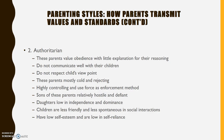The second style is authoritarian — high control and low warmth — where parents value obedience and compliance with little explanation for why they want that. Communication is not good, and they don't respect the child's point of view. They can often come off as cold, rejecting, and very controlling. Sons of these parents can often develop into very hostile and defiant young men. Daughters seem to be low in independence and dominance. The children themselves are typically less friendly, less spontaneous in social situations, and have low self-esteem and low self-reliance.